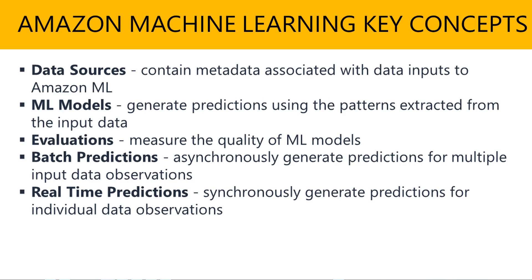Multi-class: the goal of training a multi-class ML model is to predict values that belong to a limited, predefined set of permissible values. Binary classification is simply predicting values that can only have one of two states — either true or false. Evaluations measure the quality of your ML model and determine if it is performing well. In evaluation, you can think of this as having model insights: the cutoff, accuracy, precision, recall, and so forth.